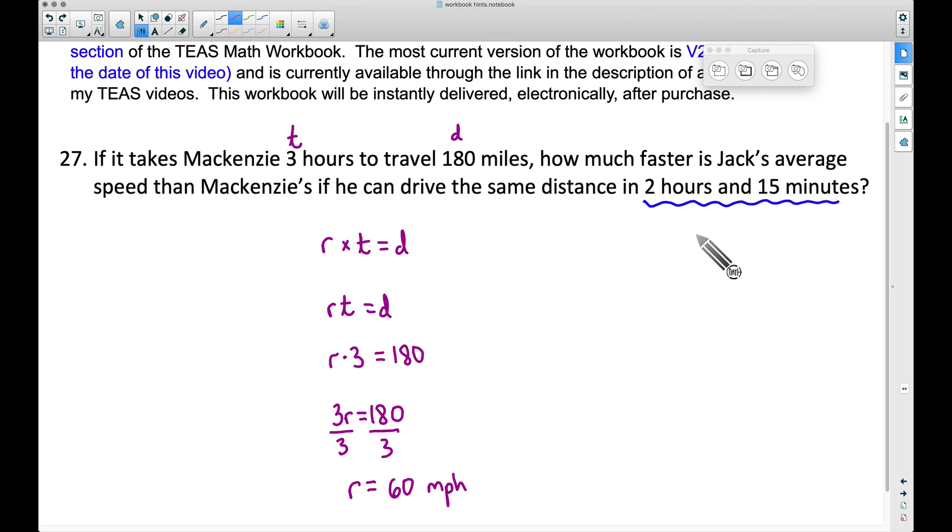It is not 2.15 hours. That is not correct, and I see a lot of people do that. Two hours and 15 minutes is actually 2 and 15 sixtieths of an hour. Why do I say 15 sixtieths? Well, 15 minutes out of 60 minutes. There are 60 minutes in one whole hour.